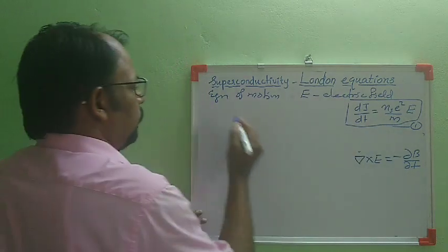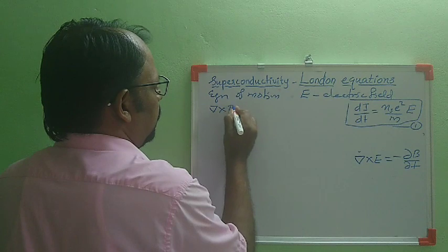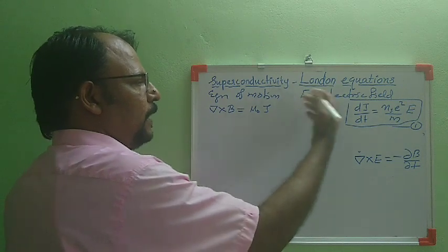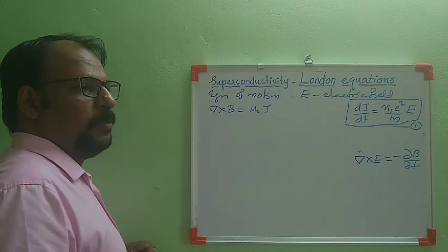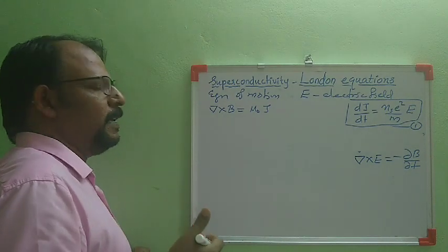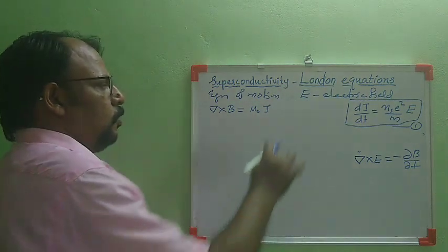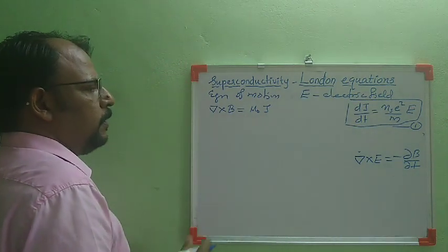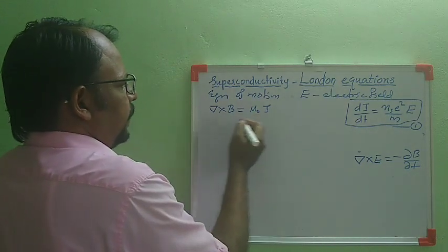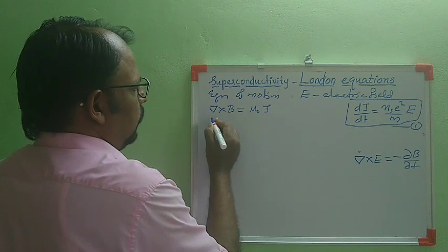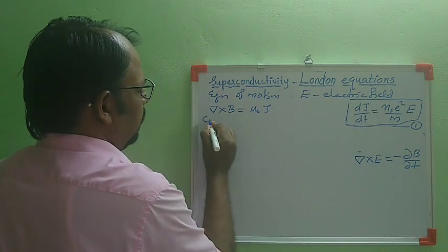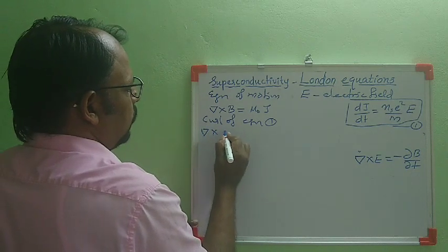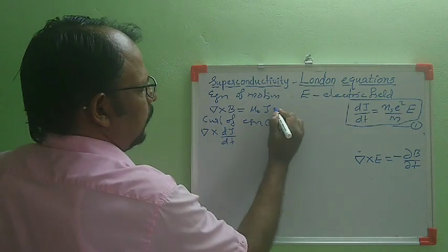From Maxwell's fourth equation, del × B = μ₀J (neglecting the displacement current density since it changes very slowly). We are taking del × B = μ₀J. When we take the curl of equation 1, the left-hand side gives del × (dJ/dt). This is equation 2.